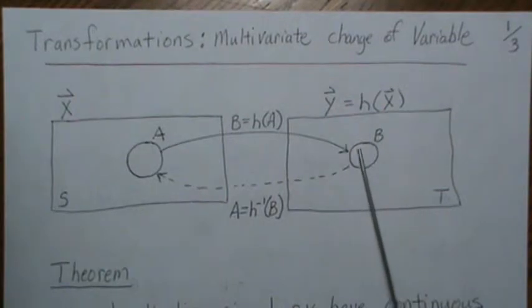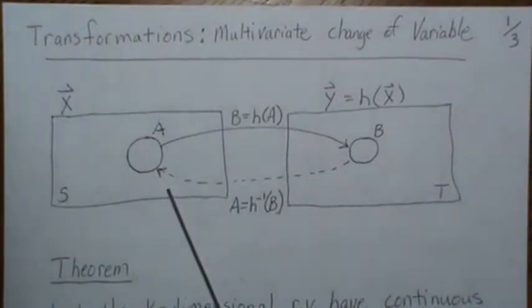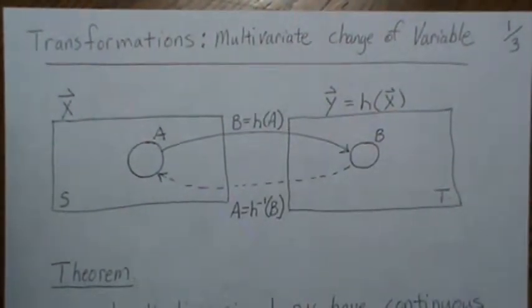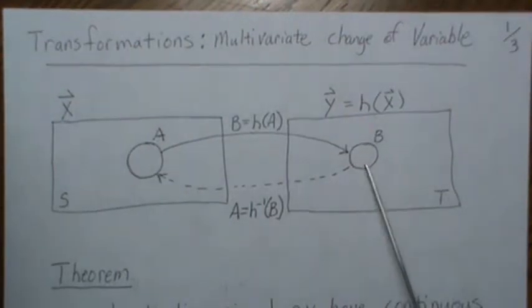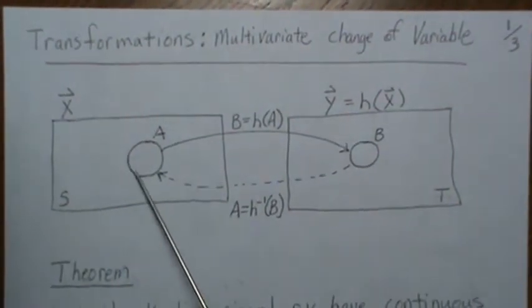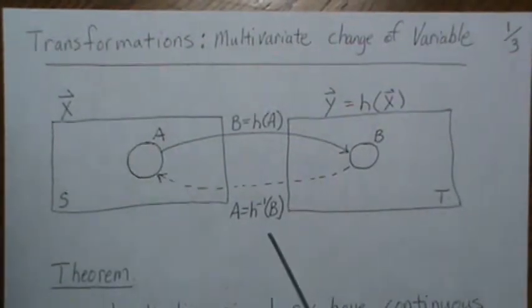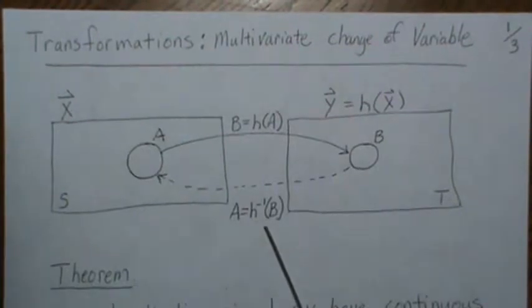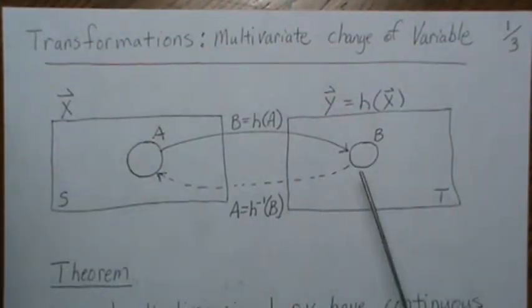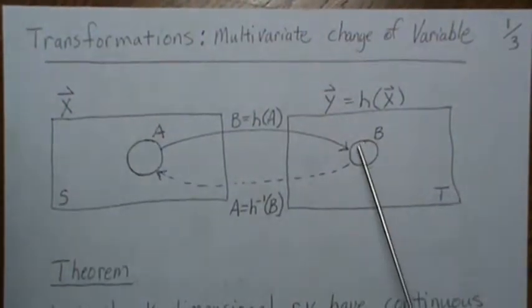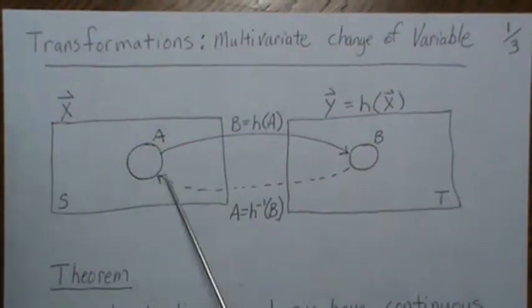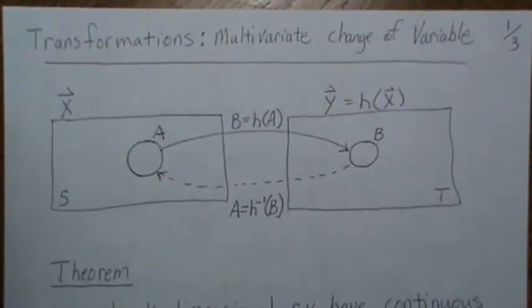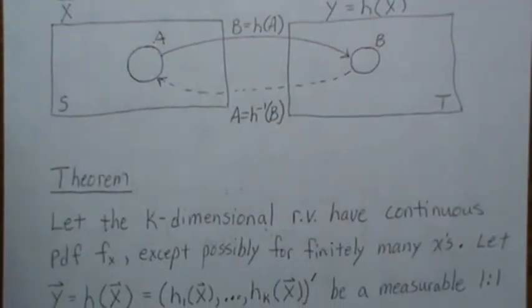We can also think of an inverse image — sometimes called a pre-image — which consists of all elements in x that are mapped to a given set in T. Now if we put more restriction on it, say it's a one-to-one transformation, that means one element here goes to one element there, and we can map it back to that same element via the inverse function.